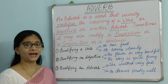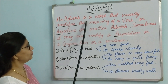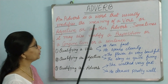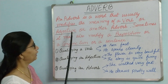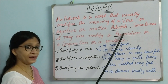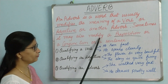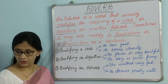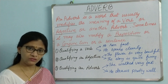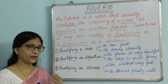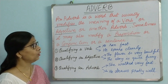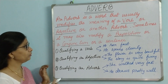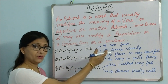Let us talk about adverbs. An adverb is a word that usually modifies — meaning it changes — the meaning of a verb, adjective, or another adverb. Sometimes it may also modify a preposition, a conjunction, or a whole sentence. So basically, an adverb lends more emphasis or changes the meaning of these various parts of speech.